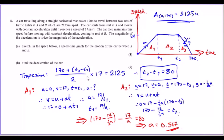Tidying that up, you can simplify T2 minus T1 to ΔT. Now looking at A1: using SUVAT, the initial speed is 0, final speed is 17, time taken is T1, and acceleration is A. Using V = U + AT and substituting in, you get T1 = 17 over A.